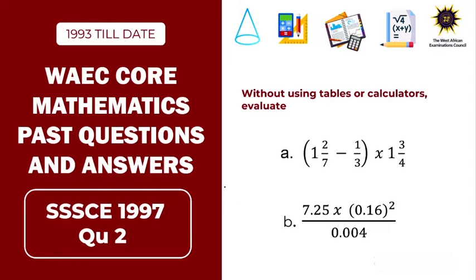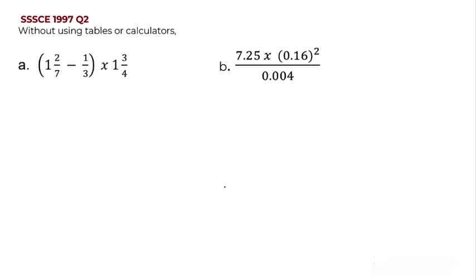Hello and welcome to my science tutorials. In today's video, we'll look at the WAEC core mathematics past questions and answers. We'll be looking at the SSE 1997 question number two. Without using tables or calculators, we had to simplify the following expressions — evaluate part A and simplify part B.